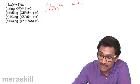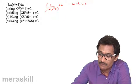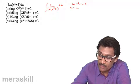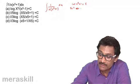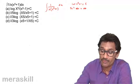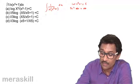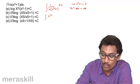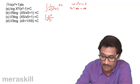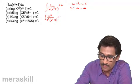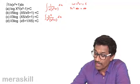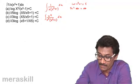Suppose we take x raised to five plus one as t. That means five x raised to four dx equals dt. But there is no five x raised to four, so we multiply both numerator and denominator by x raised to four. This becomes x raised to five into x raised to five plus one with dt.